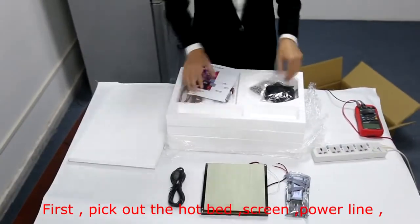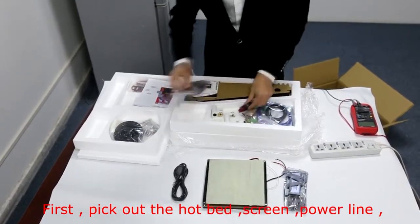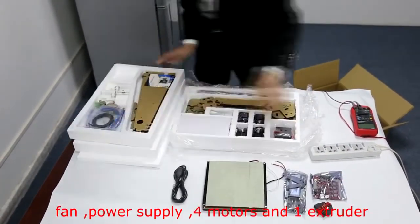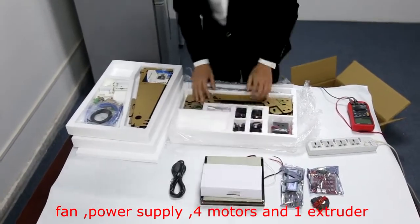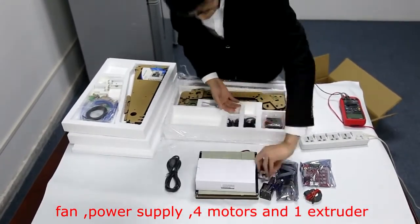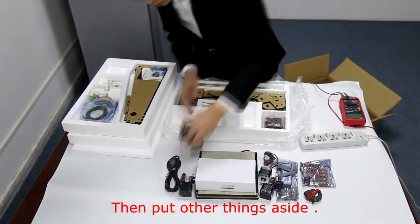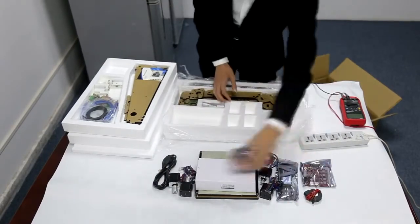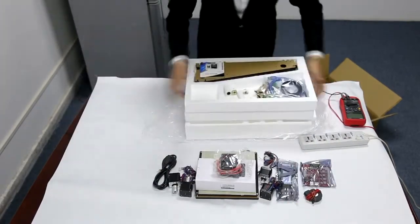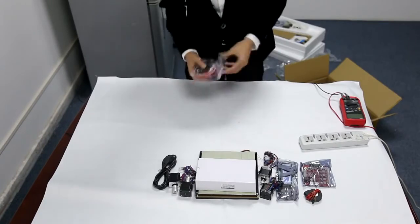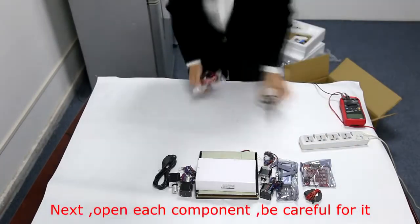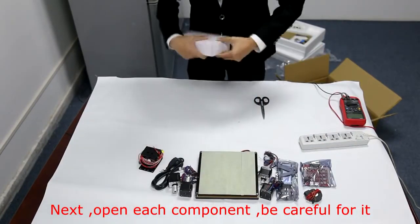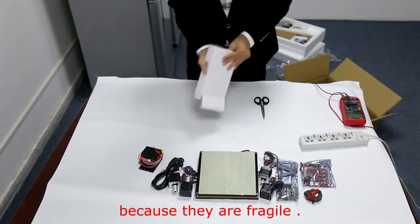First, pick out the hotbed, screen, power line, mainboard, fan, power supply, four motors, and one extruder. Then put other things aside. Next, open each component. Be careful, because they are fragile.